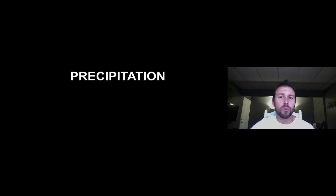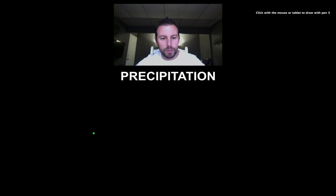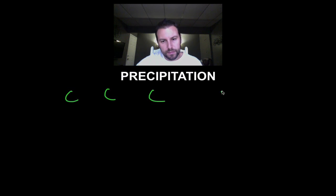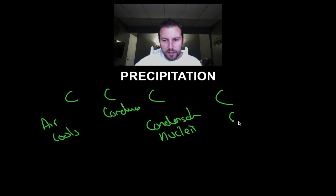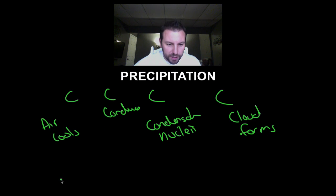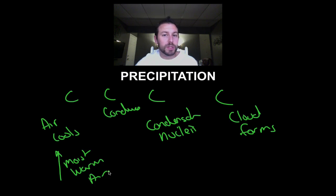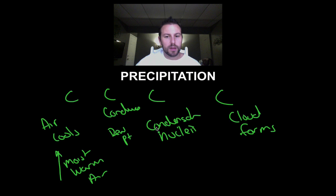And that's it — that's cloud formation. Remember the four C's of cloud formation: the air cools, then it condenses around condensation nuclei, and then a cloud forms. The air cools because it's rising — that's moist, warm air. It rises because it's less dense, cools to the dew point, condenses around particles in the atmosphere or condensation nuclei, and then clouds form.